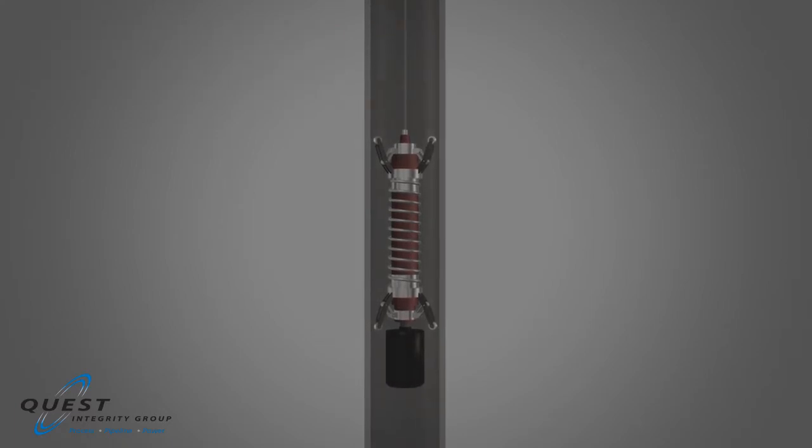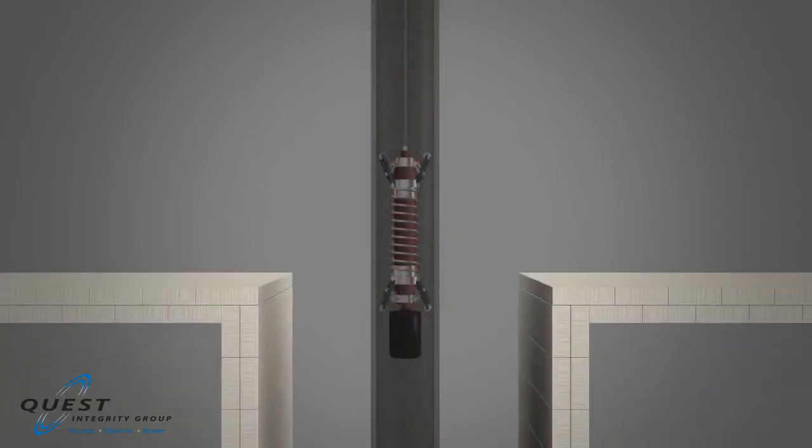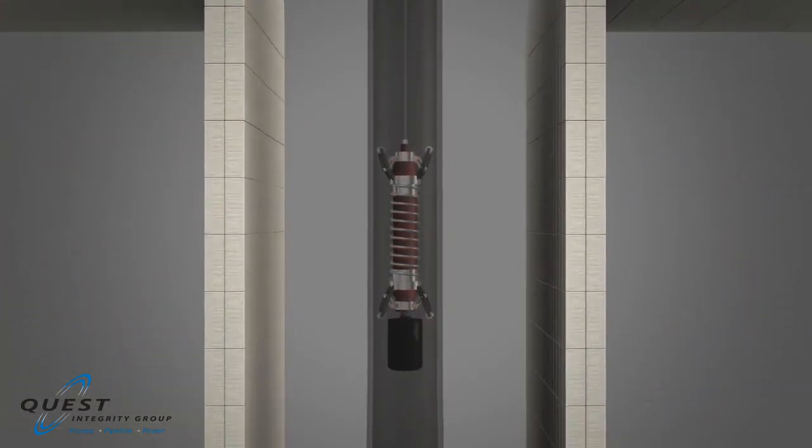LOTUS quickly collects more than 2 million inspection data points over the tube's length and completes the inspection of a single tube in under 3 minutes. These inspections can be performed in parallel with catalyst change-out, with no increase in reformer downtime.